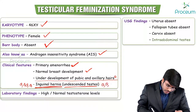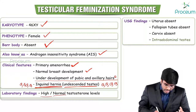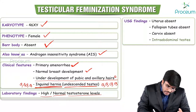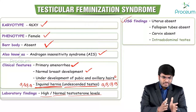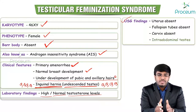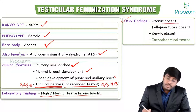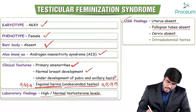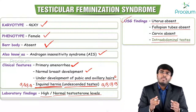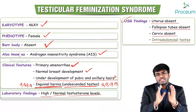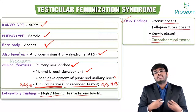Laboratory findings show high-to-normal levels of testosterone. Ultrasonographic findings: absence of uterus, fallopian tubes, and cervix. Intra-abdominal testes may be found, or testes may be present in the inguinal canal. Sometimes testes are found under the labia — these swellings beneath the labia are the undescended testes.